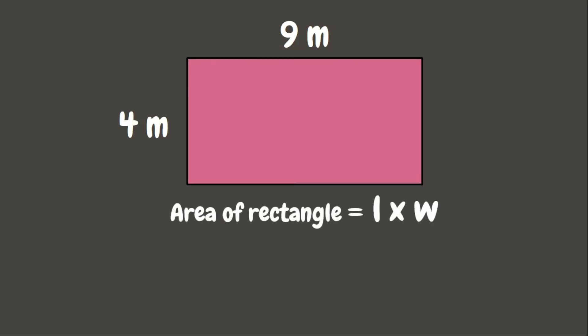We have another rectangle whose length measures nine meters and width measures four meters. Using the formula: area equals length times width, we multiply nine meters by four meters and get 36 square meters.